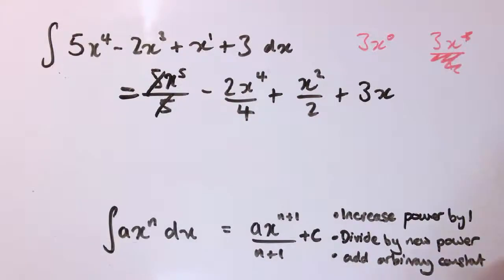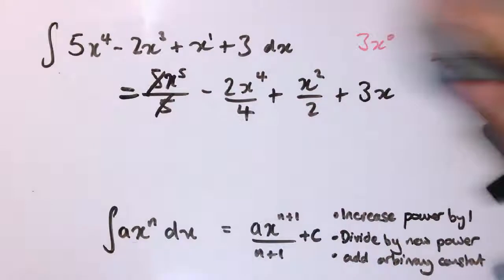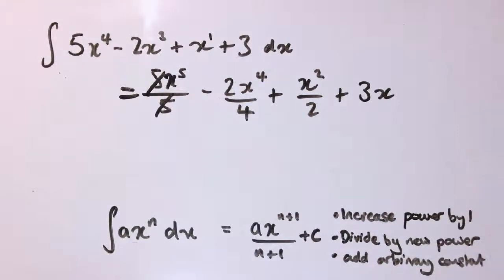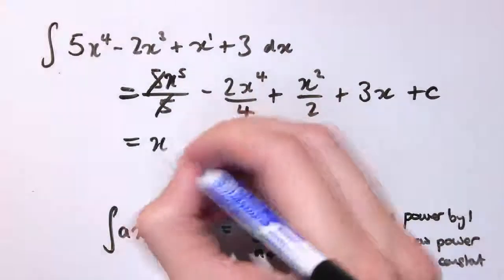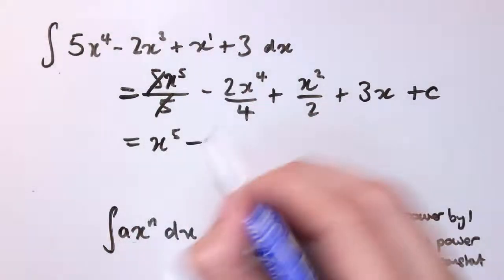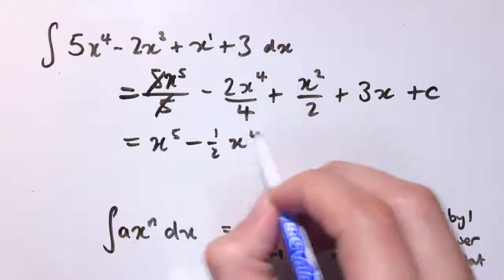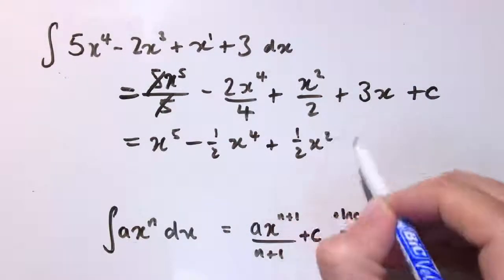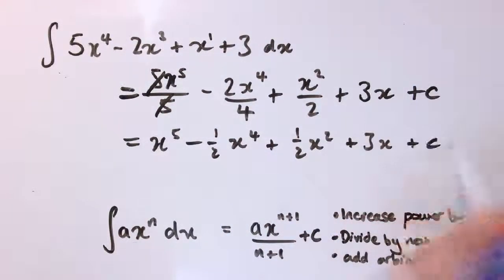You can think this is a bit of a special case if you like in how we think about it, but it does fit in to the pattern. And then we have our plus c for the arbitrary constant, so we just tidy this up: x to the 5, 2 over 4 is a half, so minus 1 half x to the 4, plus 1 half x squared, plus 3x, plus c.